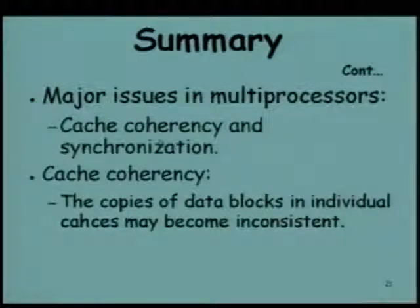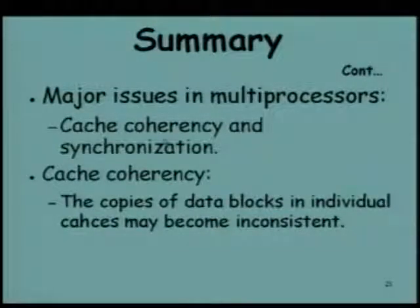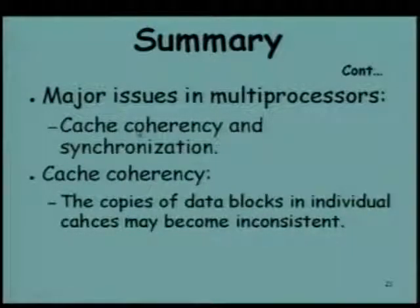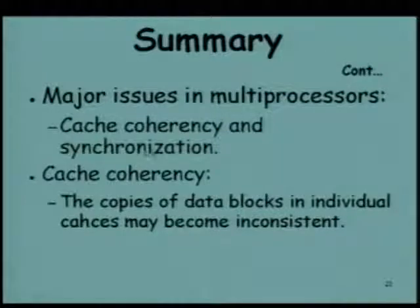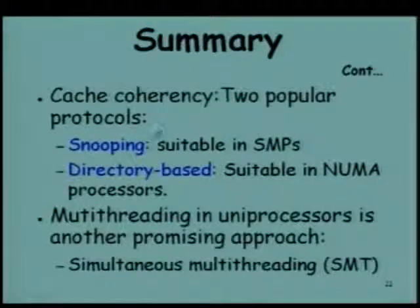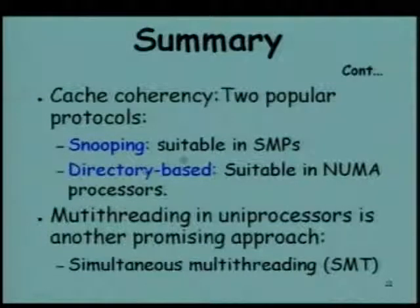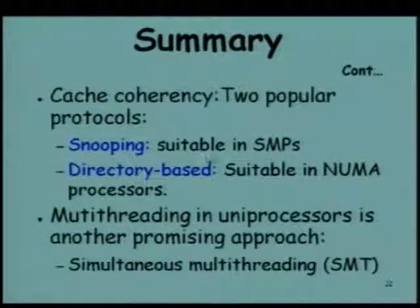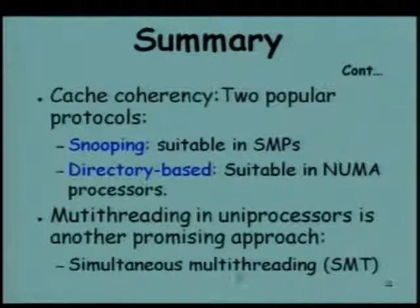These are fundamental issues with any multiprocessor and are always asked in advanced architecture courses: what is coherency, how does it occur, what are the resolution protocols, synchronization barriers, and so on. Solutions fall into two broad categories: snooping and directory-based. Snooping is suitable for SMPs (symmetric multiprocessors) with shared memory, whereas directory-based is for non-uniform memory access (NUMA) processors. We also looked at simultaneous multithreading.